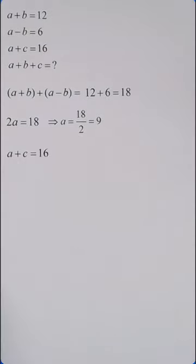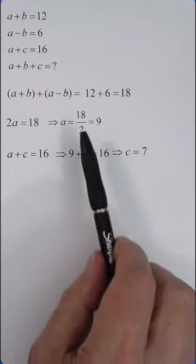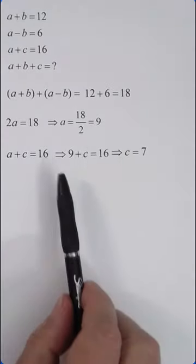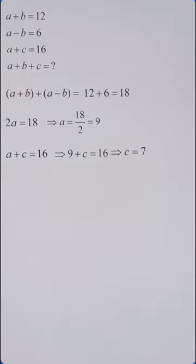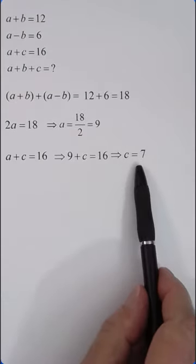Now a plus c is 16, but we just found out that a is 9. So 9 plus c is equal to 16, which means that c is equal to 7.